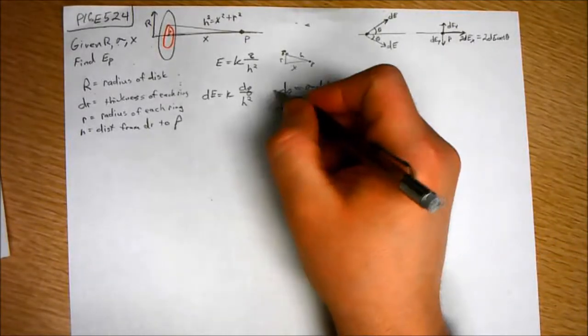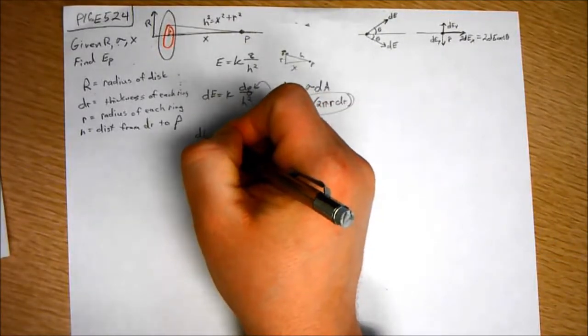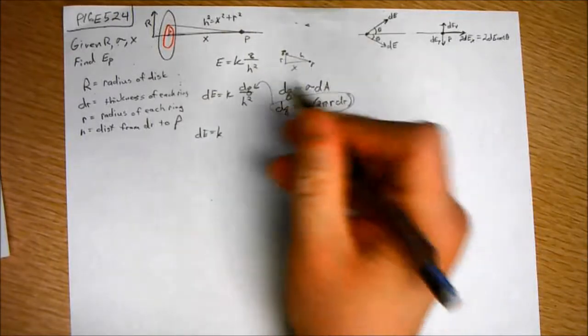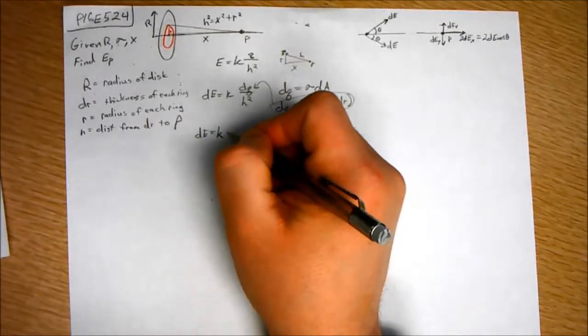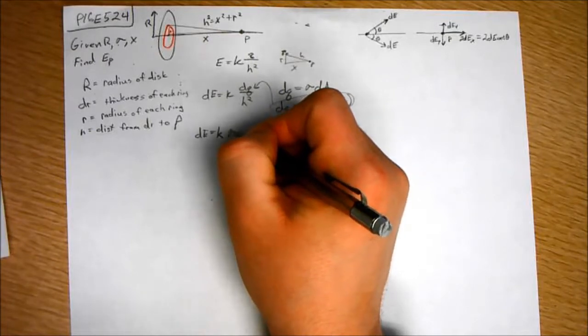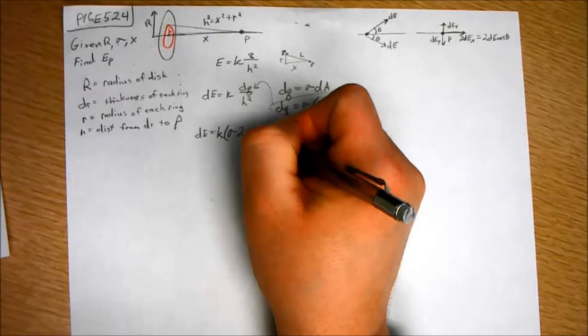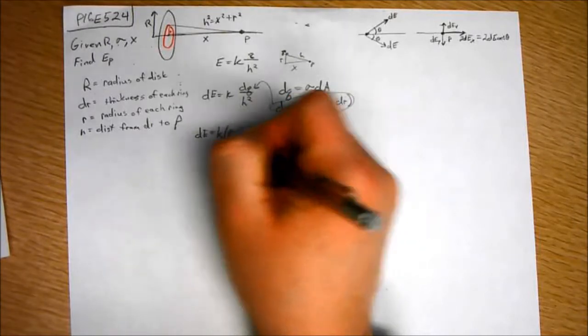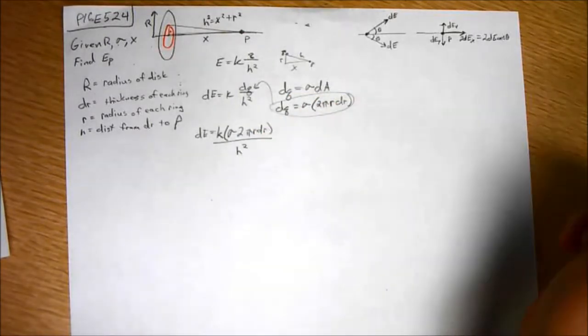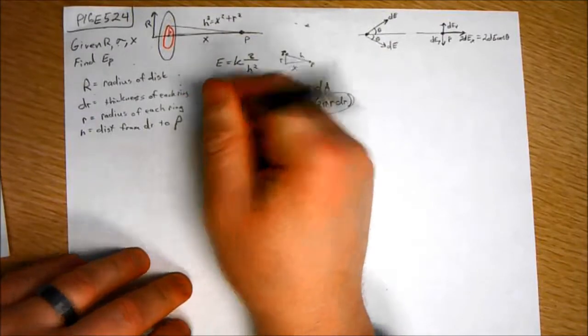I'm going to take that here. DE equals K times, and I'm going to put this in parentheses, sigma 2 pi R dr, all over H squared.